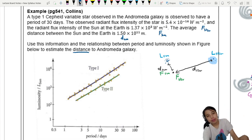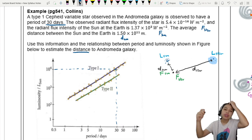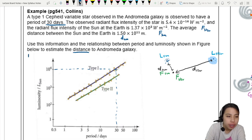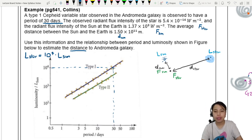First step, let's look at the graph. Period of 30 days means we got to do a very rough estimate, but probably about 10⁴ times the luminosity of the sun. From this, the luminosity of the star is going to be 10⁴ times the luminosity of our sun. That gives us a nice ratio we can use later.